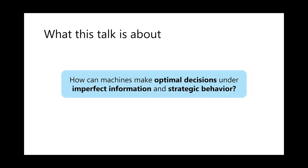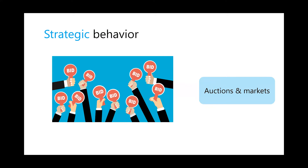Imperfect information means you sometimes have to make a decision without knowing the exact state of your environment — for example, not observing what people behind a fog of war are doing. Strategic behavior means we assume all agents are selfish and trying to maximize their own utility, not shying away from doing whatever is best for them even if it hurts you. Strategic behavior arises in many real-life interactions; one example is auctions and markets, where bidders realize they can gain more profit by misreporting their evaluations of items.